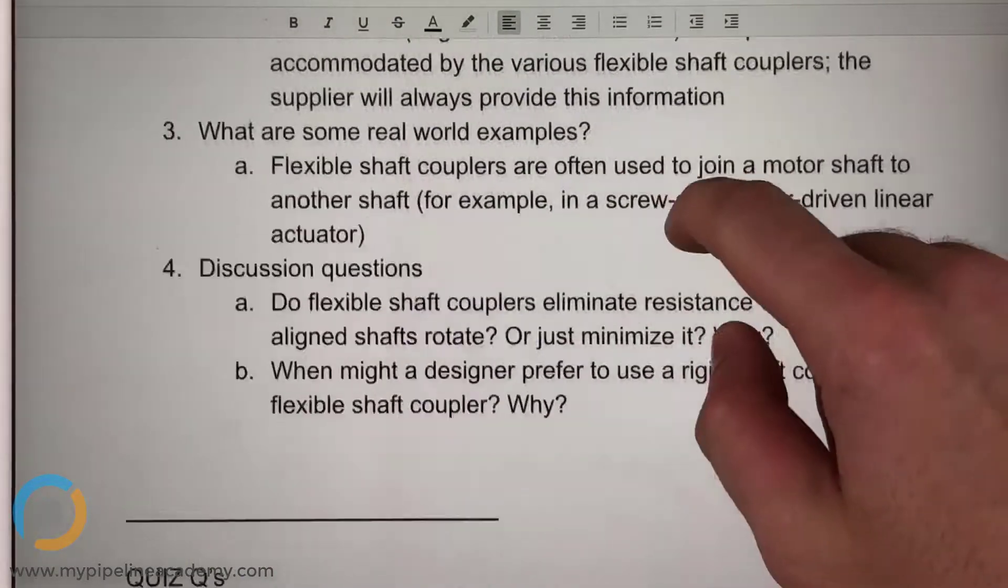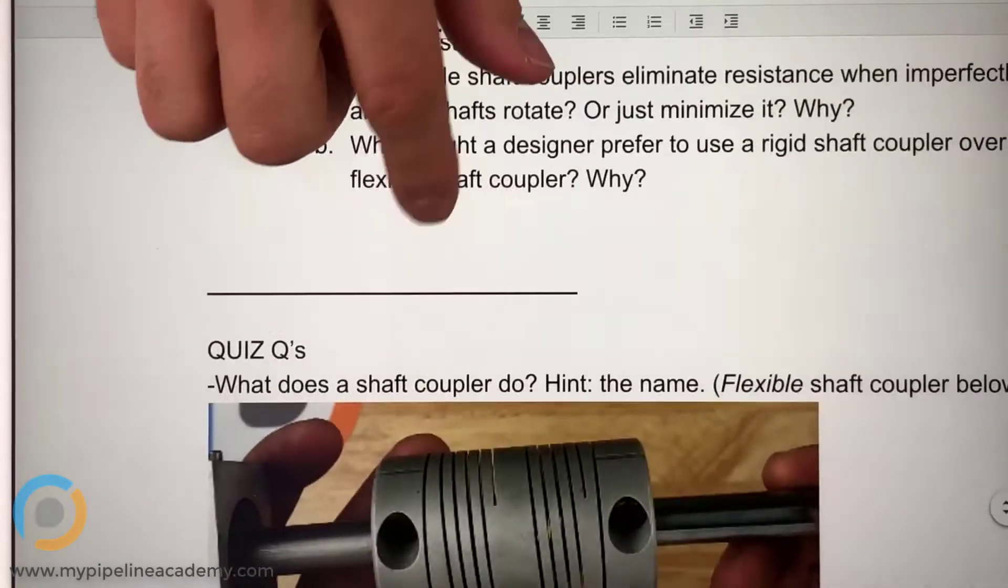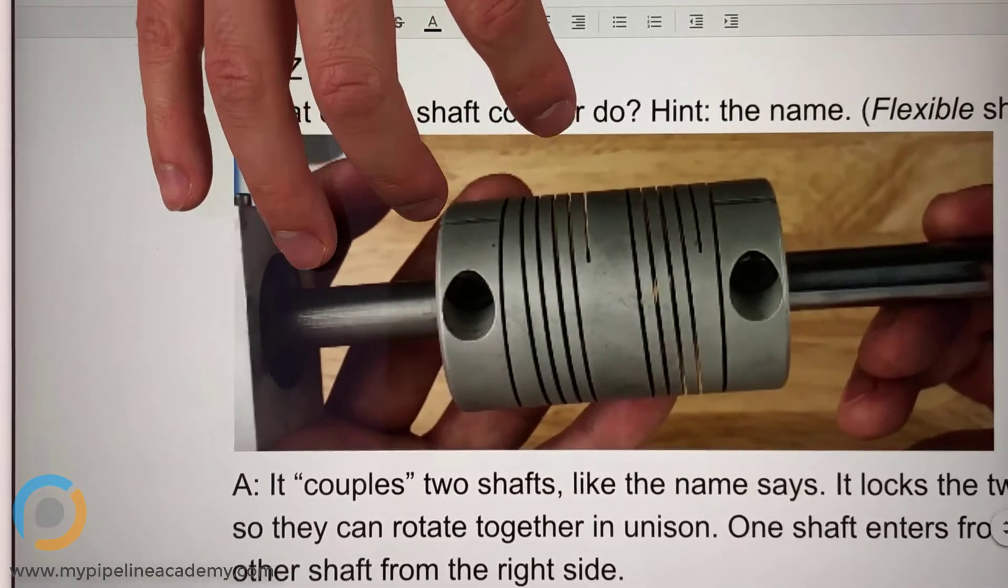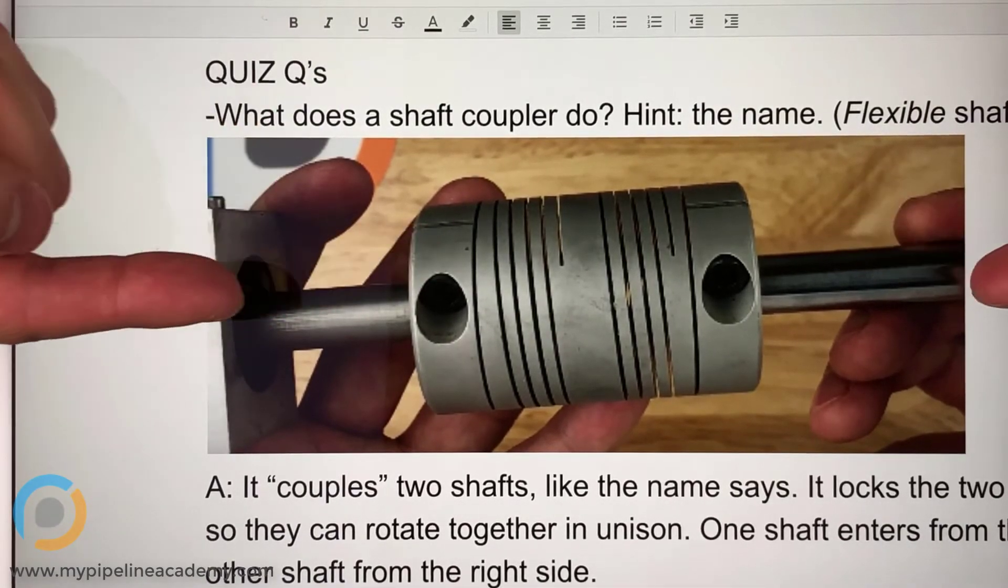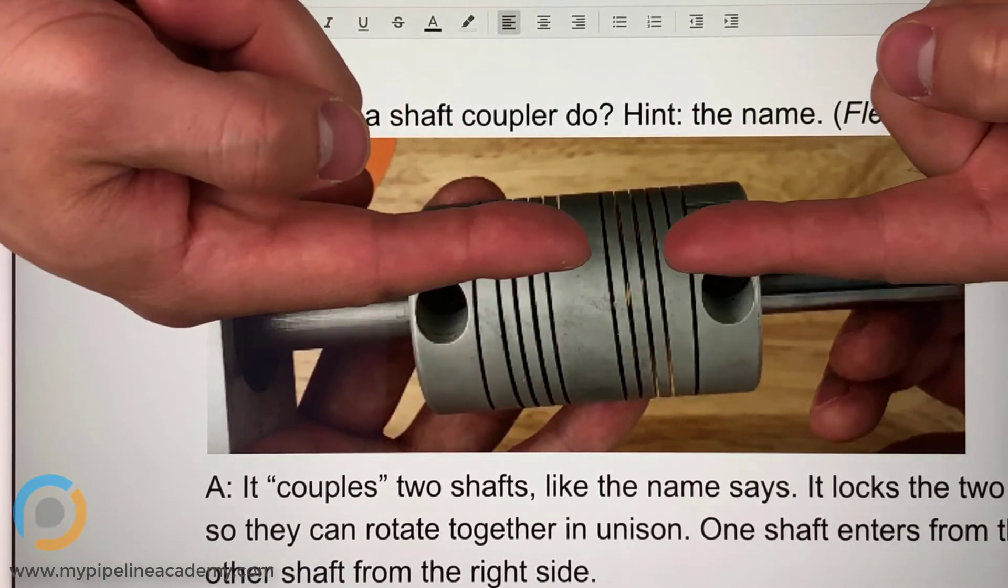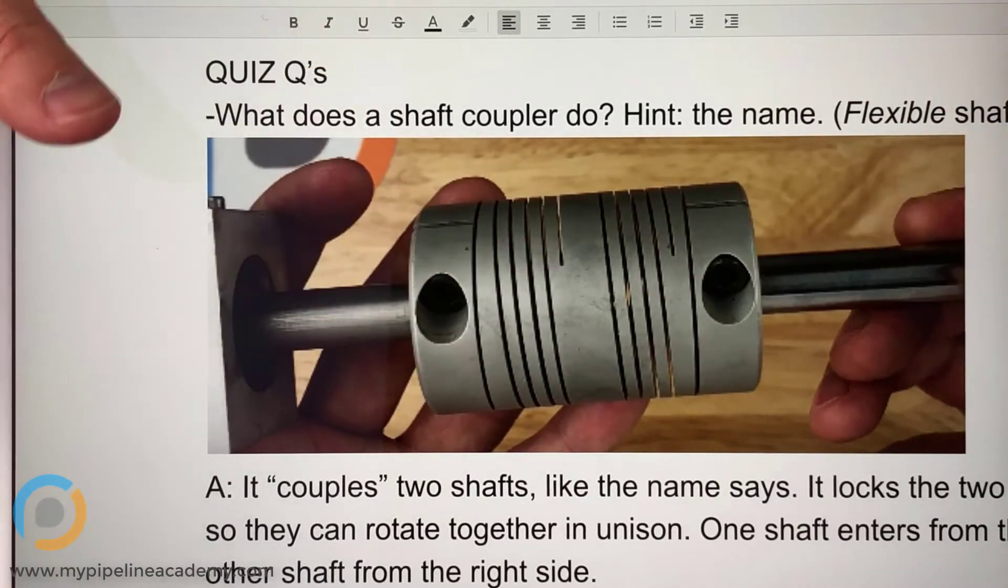And then the second one here. When might a designer prefer to use a rigid shaft coupler over a flexible shaft coupler? Yeah, when you know for sure, to the most precise measurement, I suppose, that the two shafts are aligned. Right, concentric? Yep. Concentric.